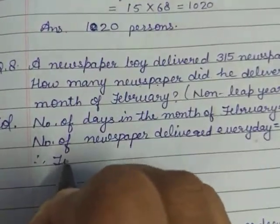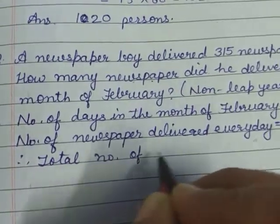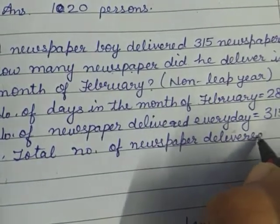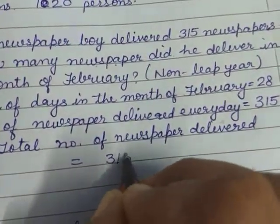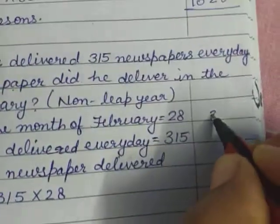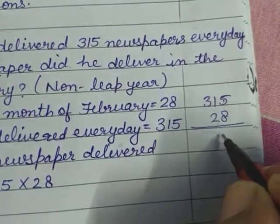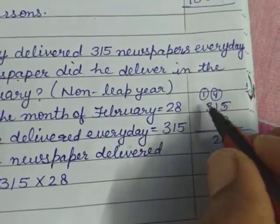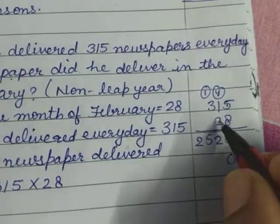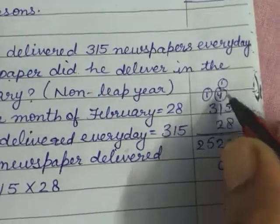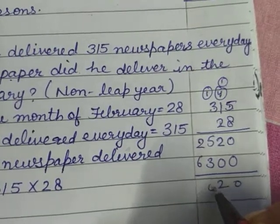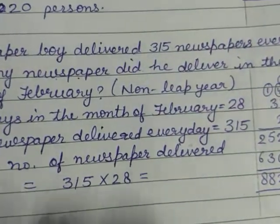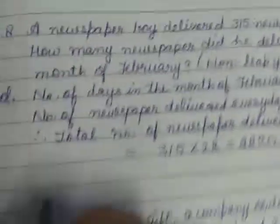Therefore, total number of newspapers delivered is equal to 315 into 28. अब यहां इसको multiply करते हैं: 8 × 5 = 40 carry 4, 8 × 1 = 8 and 4 = 12, carry 1, 8 × 3 = 24 and 1 = 25. Ones की place पर 0, 2 × 5 = 10 carry 1, 2 × 1 = 2 and 1 = 3, 2 × 3 = 6. Answer: 8,820 — तो फरवरी के महीने में 8,820 newspaper deliver करता है.